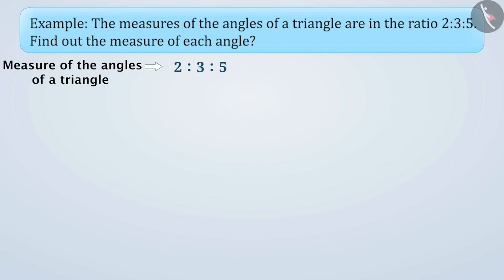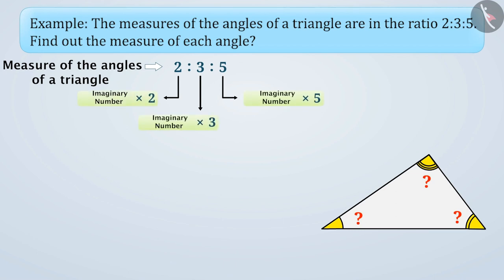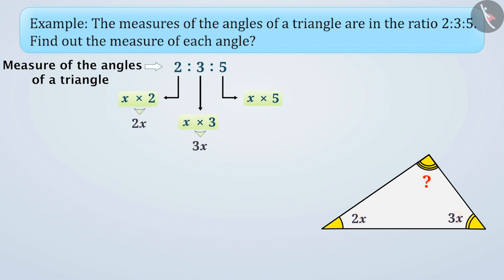From a ratio, we are not able to know the exact measure. If we multiply an imaginary number with the given ratios, then we can find the measure of each angle of the triangle. Suppose this imaginary number is x. Based on this, we can say that the measures of the angles of the triangle are 2x, 3x, and 5x.